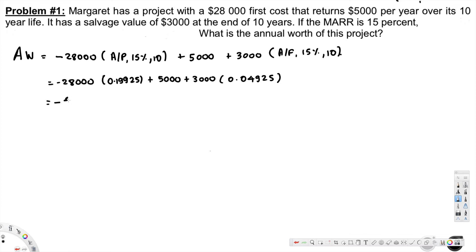And finally we will end up with negative $431.25. So the annual worth of this project is negative $431, and that's the answer for this question.